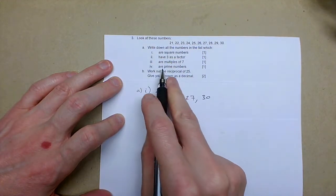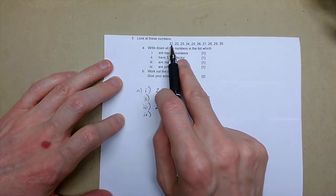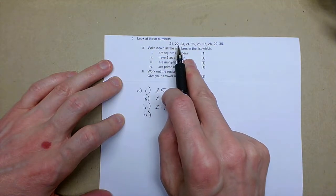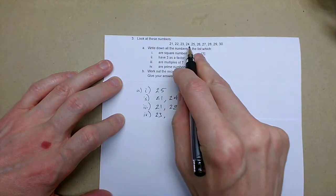Part four are prime numbers, slightly more difficult this one. We know it's not 21, 22 is two elevens, 23 is prime, 24 is an even number, 25 five fives.